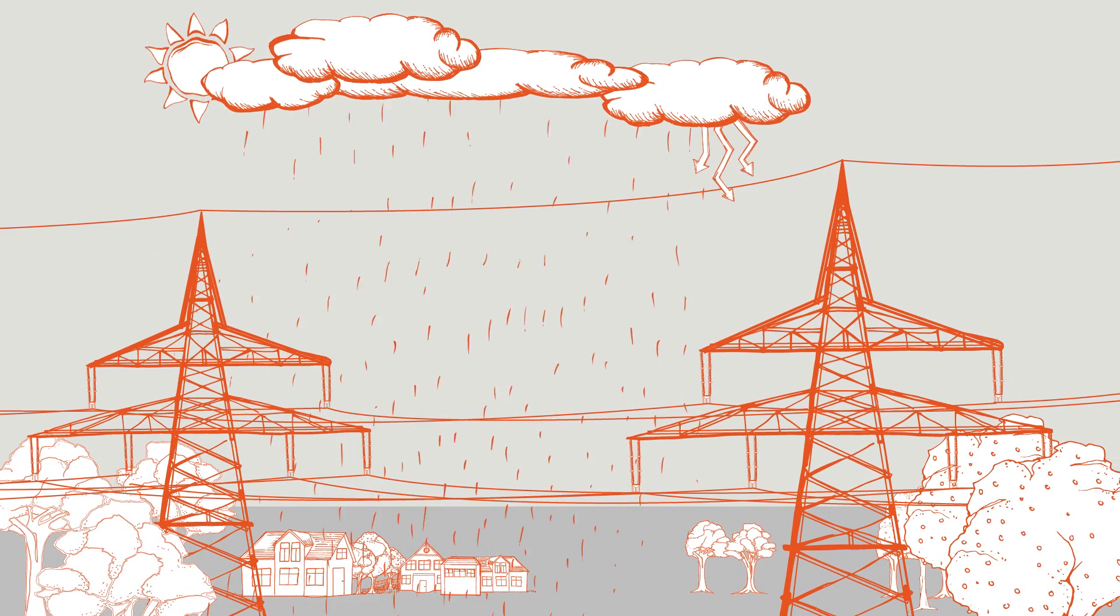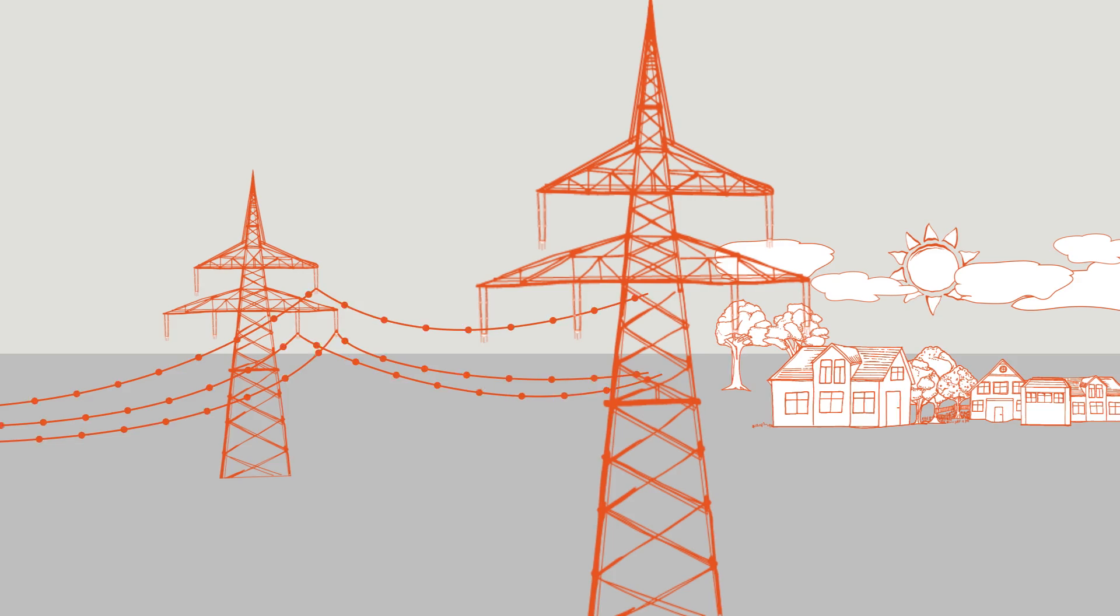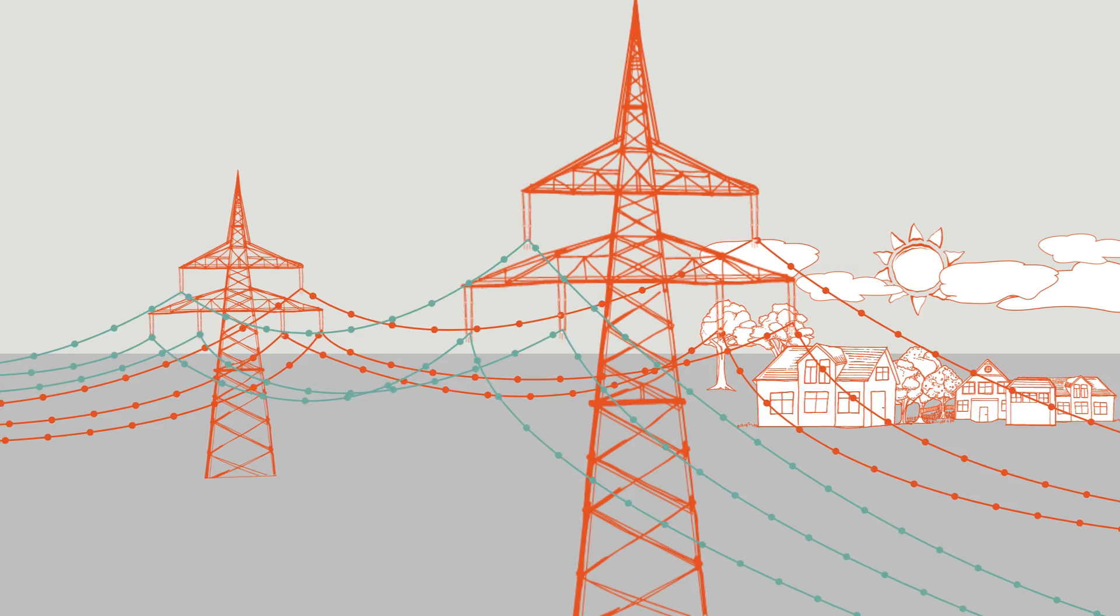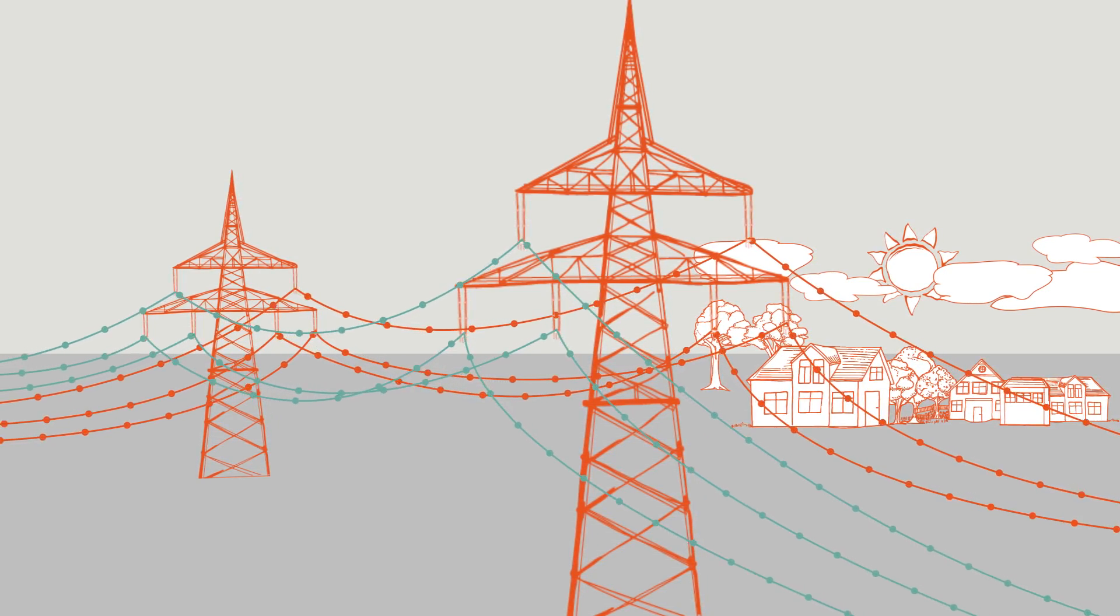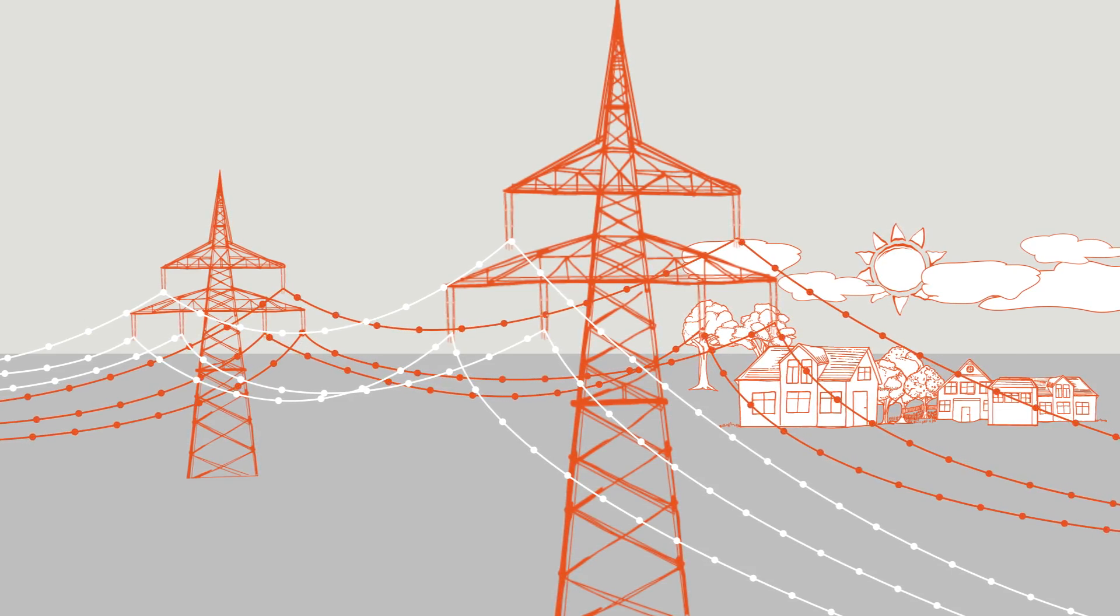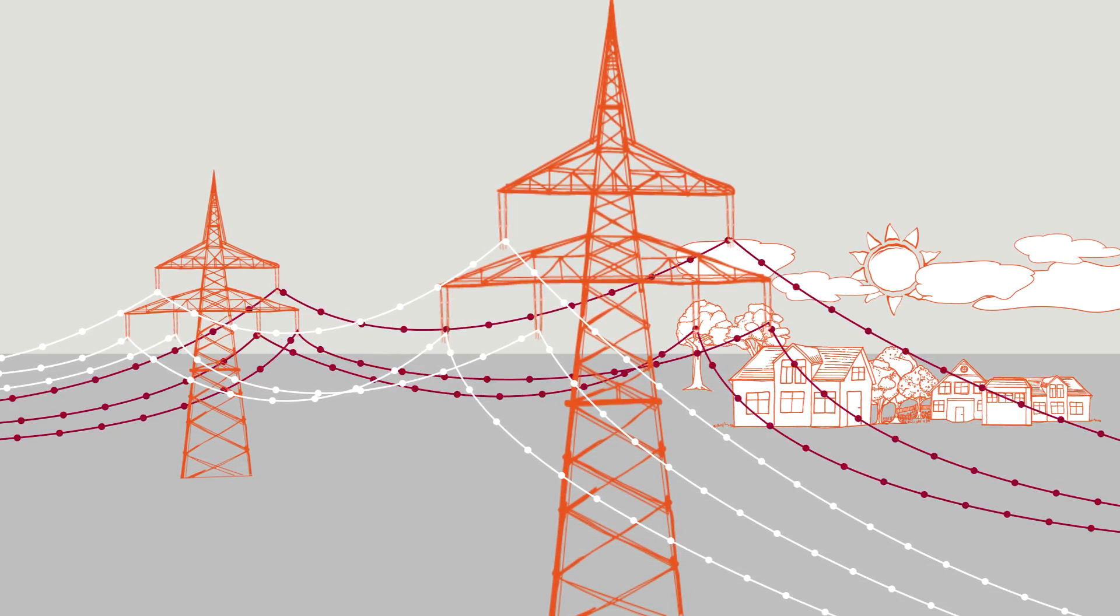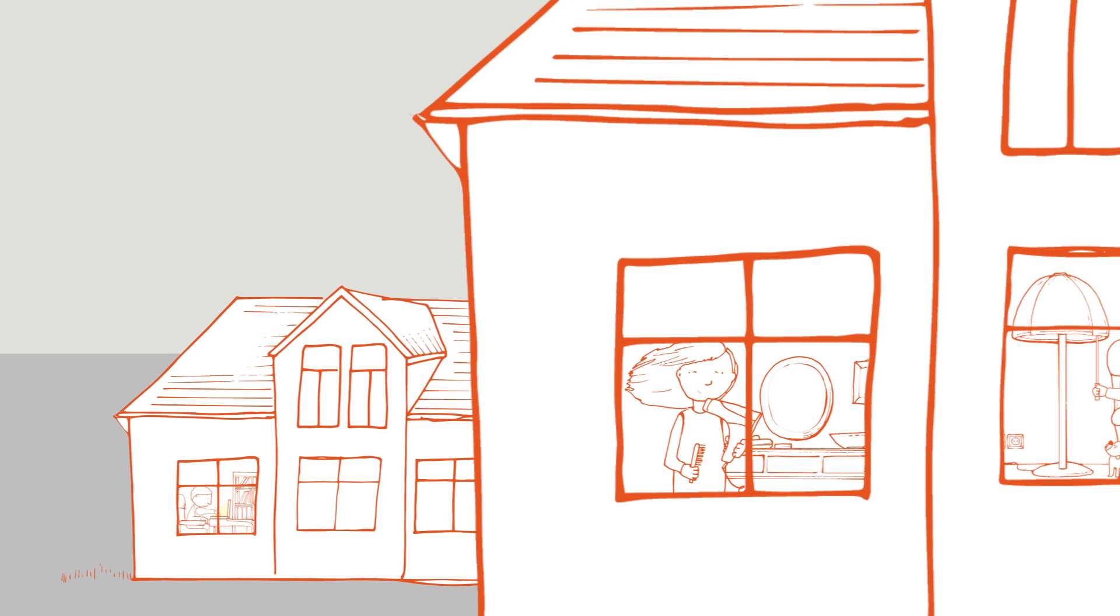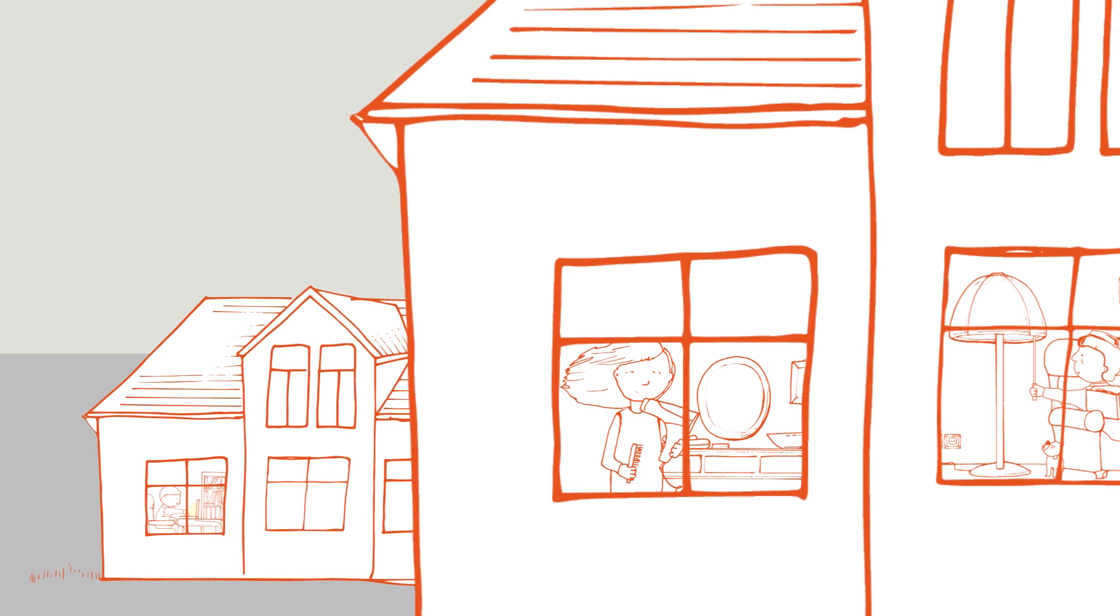The overhead lines of the 50 Hertz high-voltage grid are usually equipped with two electrical circuits. Electricity flows on the left and the right side. If one system, or even the entire line, fails, the rest of the power grid ensures the secure and uninterrupted electricity supply. This securing principle is called N-1.